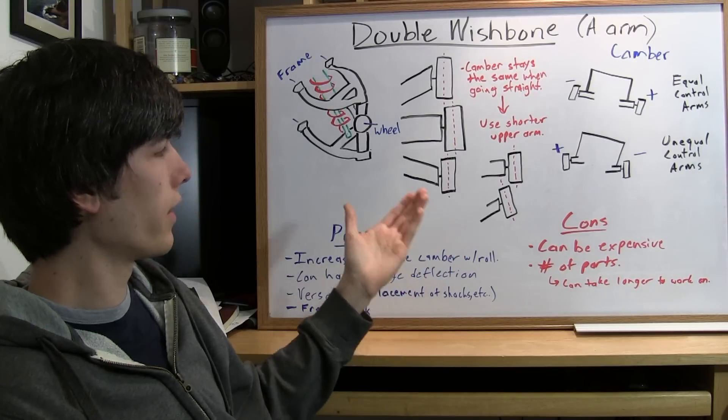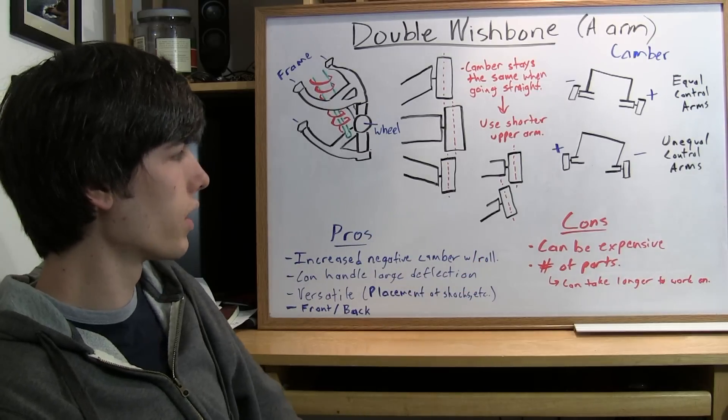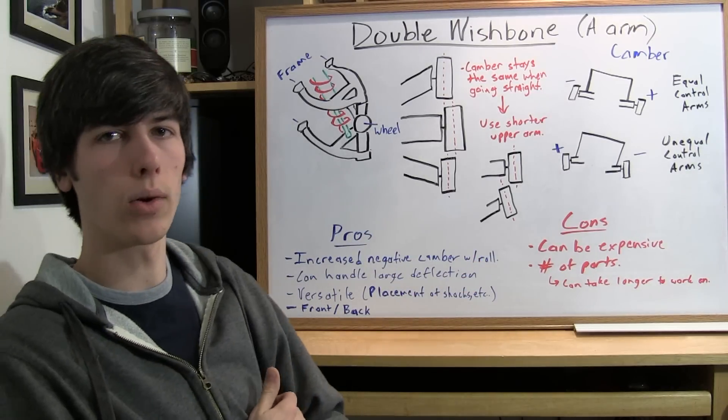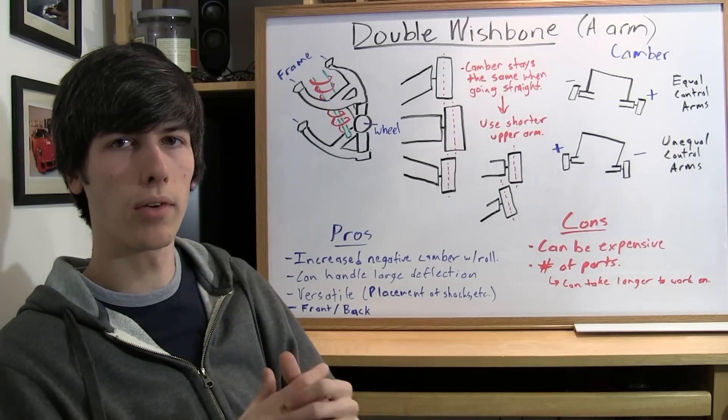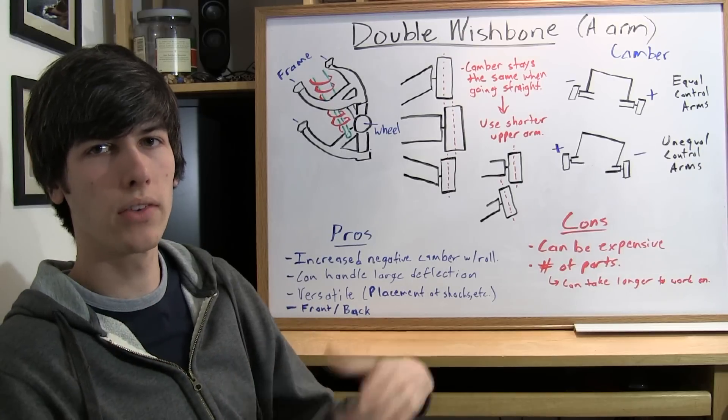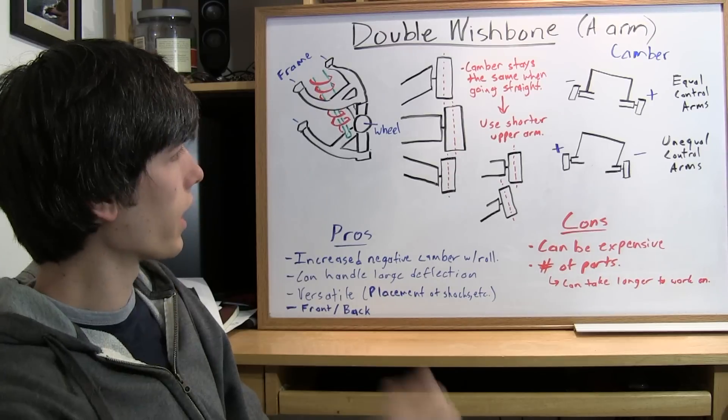Some of the downsides, some of the bad things of a double wishbone suspension, well it can be more expensive. And also, it has a greater number of parts. So greater number of parts means when you're working on it, it can take longer, or if you're getting it worked on, it can be more expensive to have someone service it. So that's definitely a negative side.